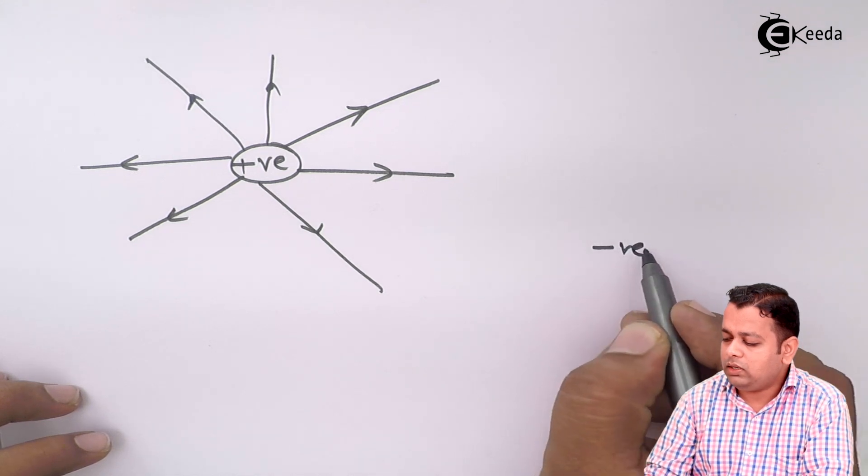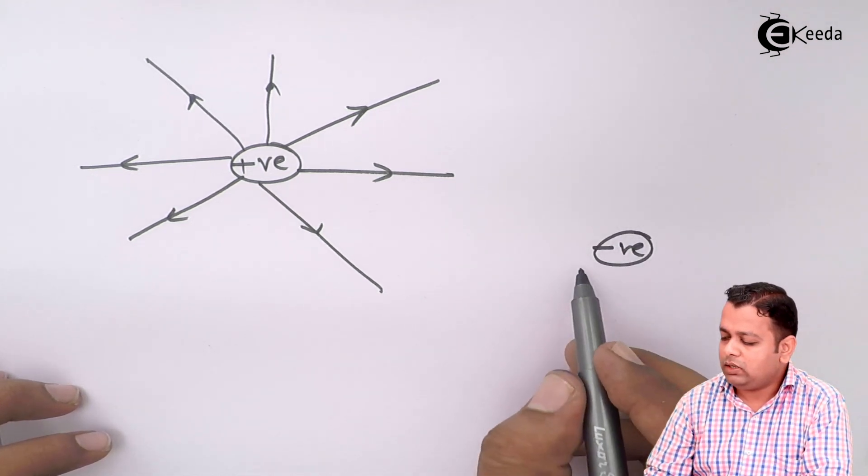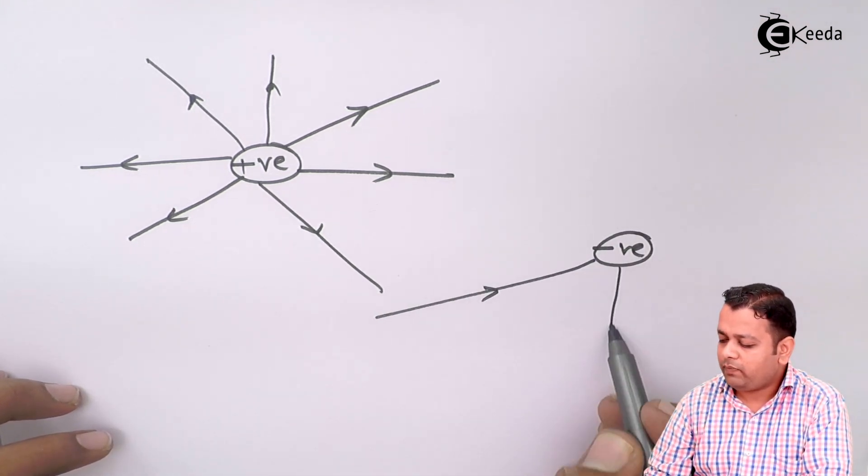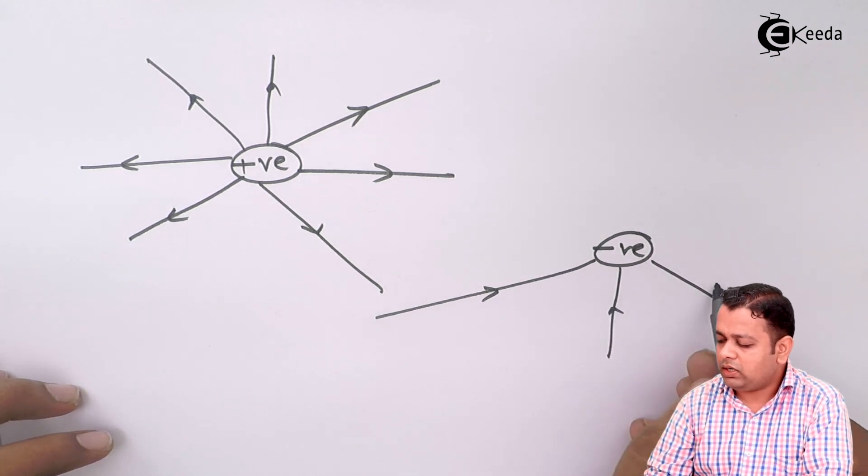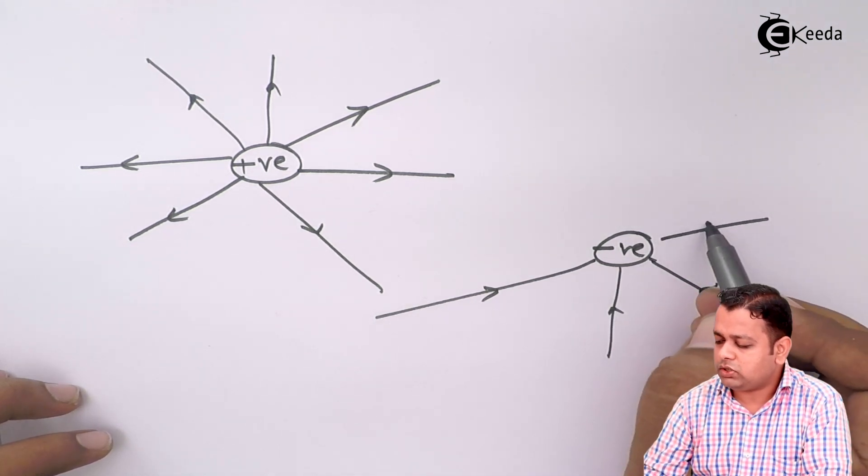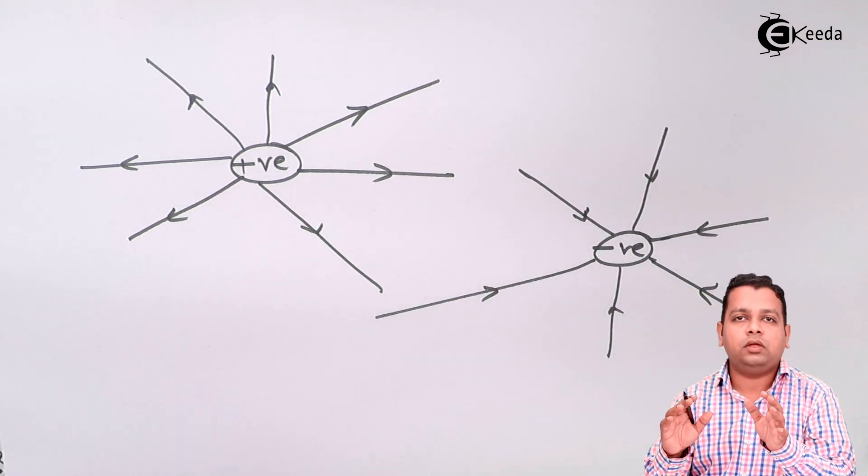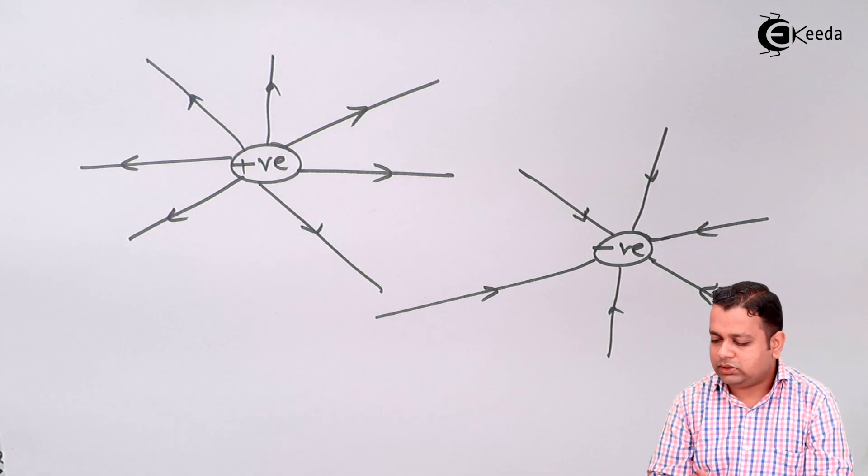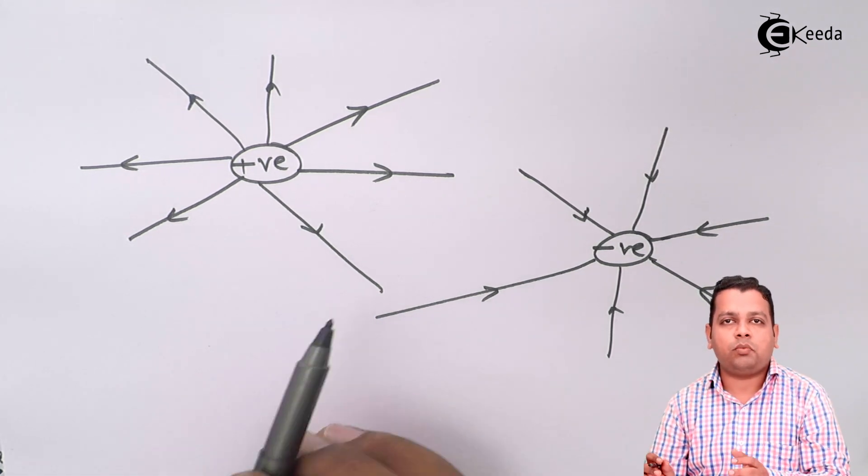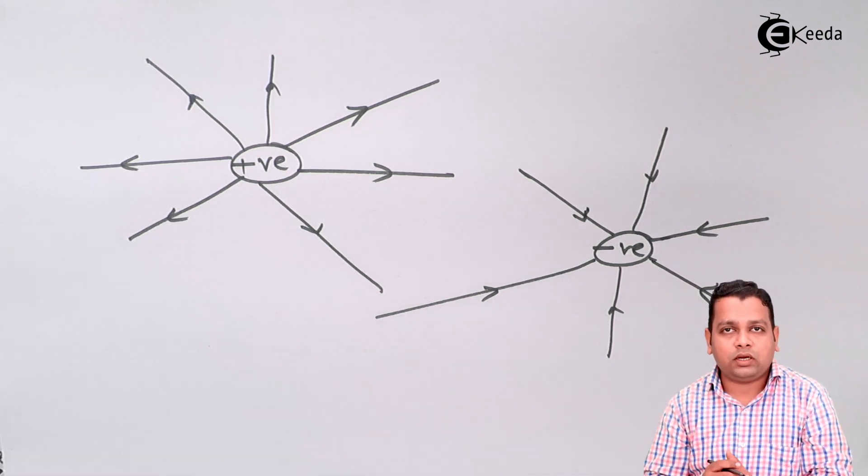Whereas if we have any negative polarity charge, the electric flux lines that are coming from outside, generated at some other positive charge, will terminate onto this negative charge. So this is the negative divergence. These are the two examples of divergence in electric field.